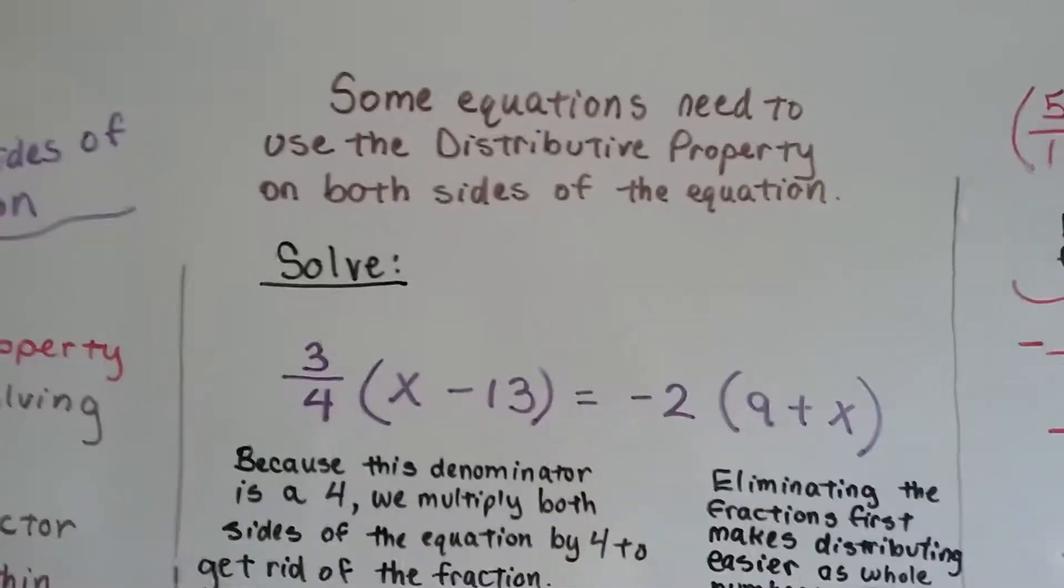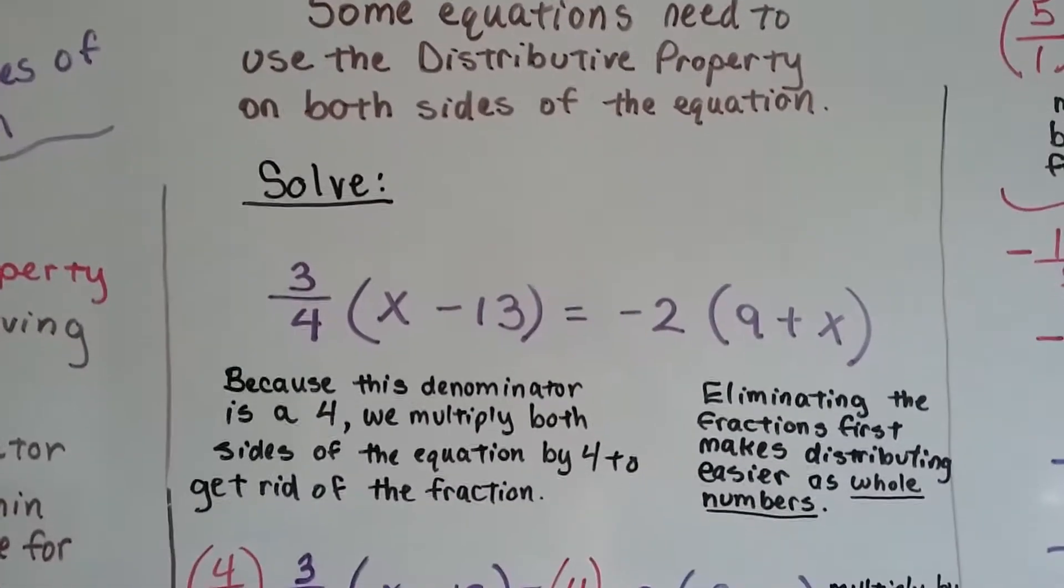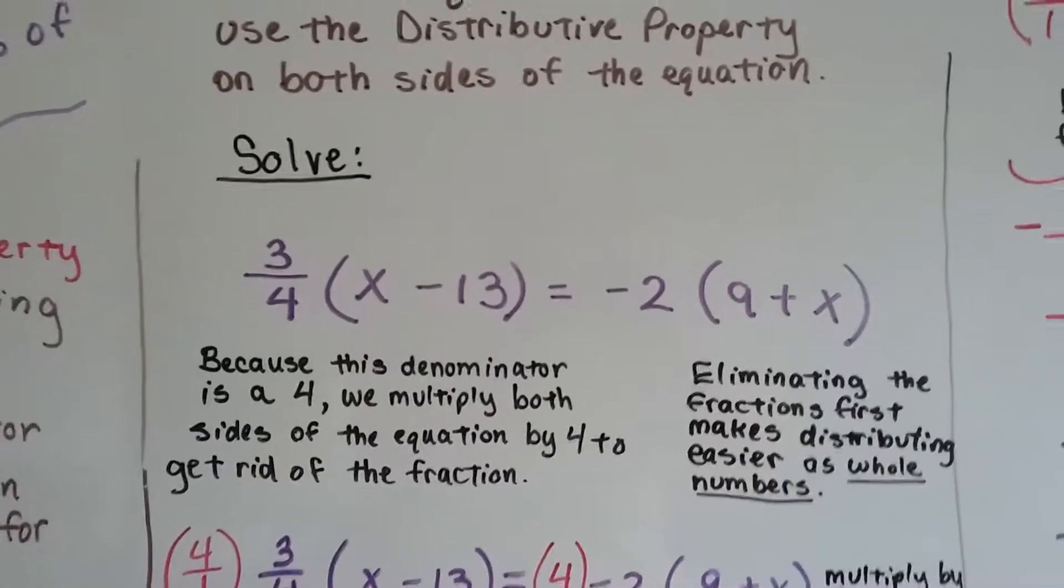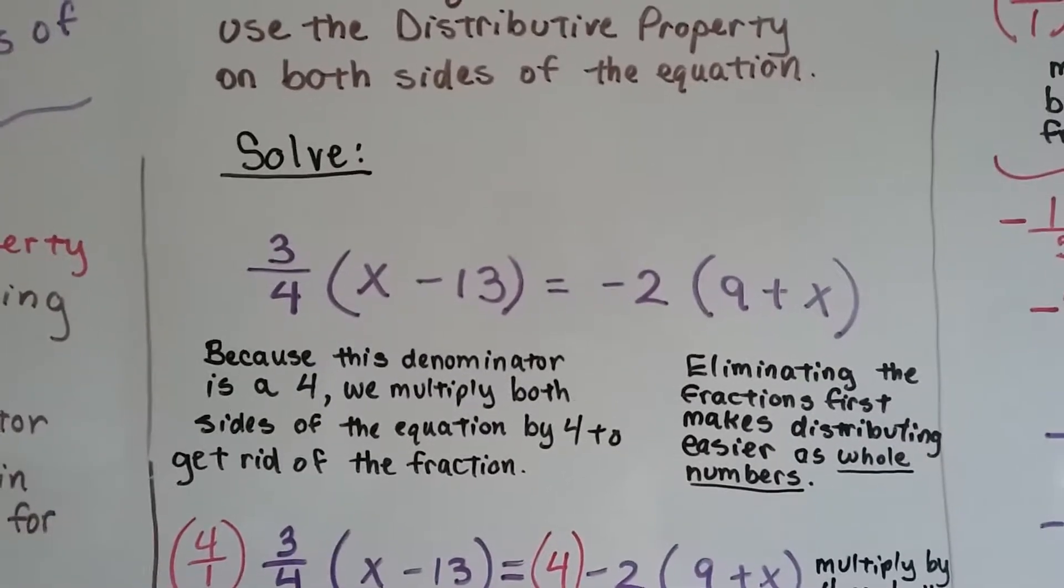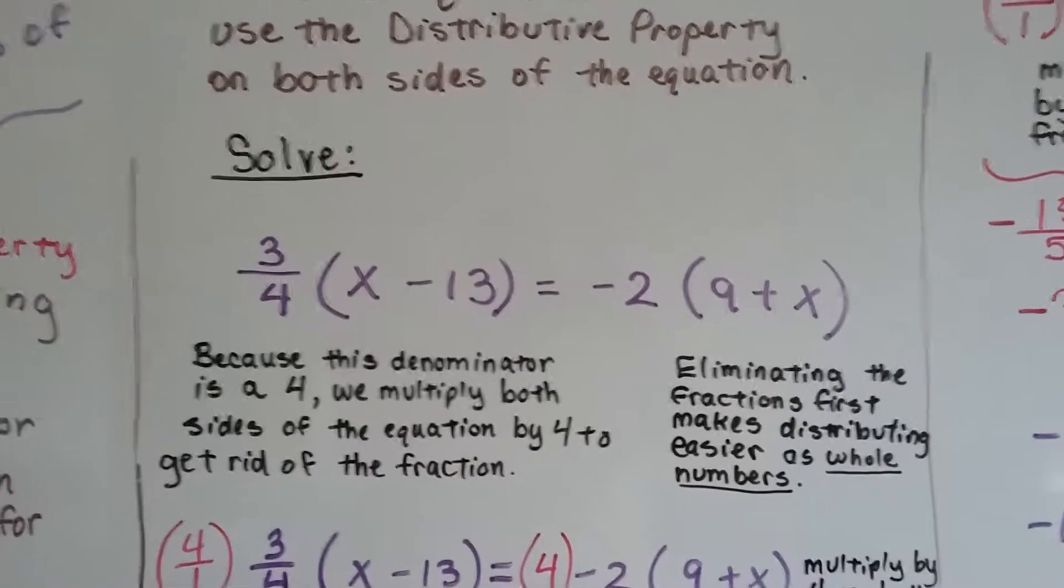Some equations need to use the distributive property on both sides of the equation. Like for this one, it says solve 3/4 times (x - 13) equals -2(9 + x).